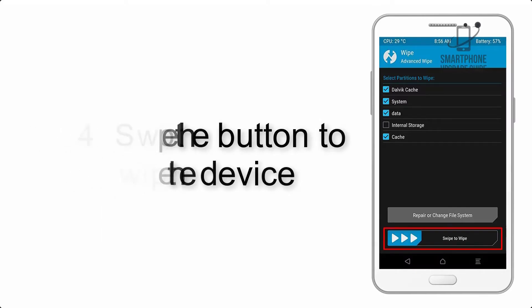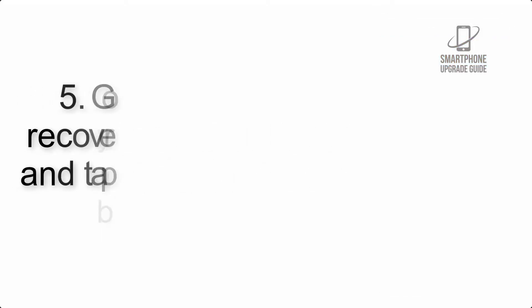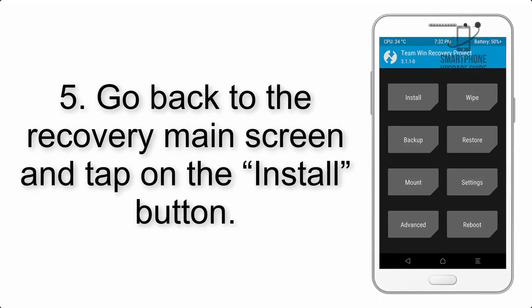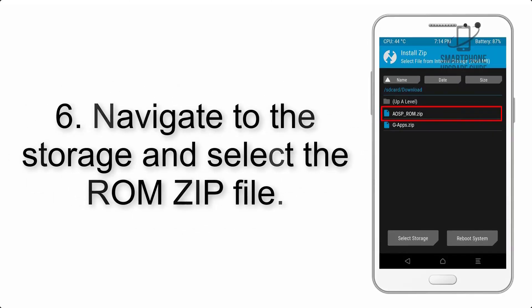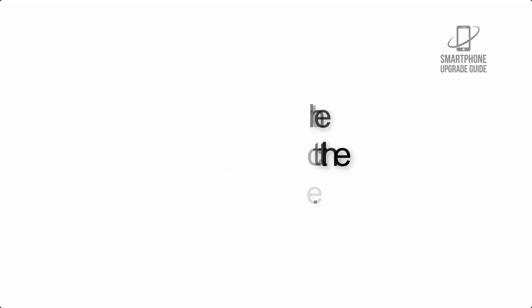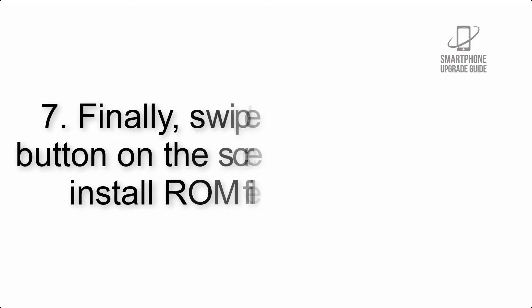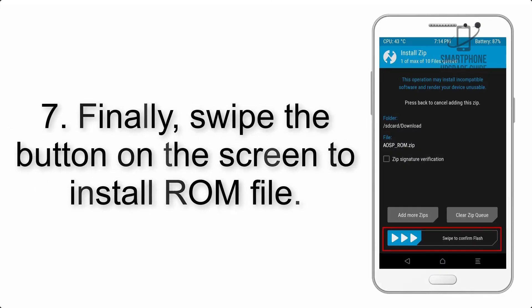Step 5: go back to the recovery main screen and tap on the Install button. Step 6: navigate to the storage and select the ROM zip file.